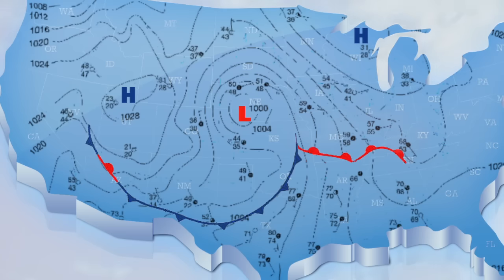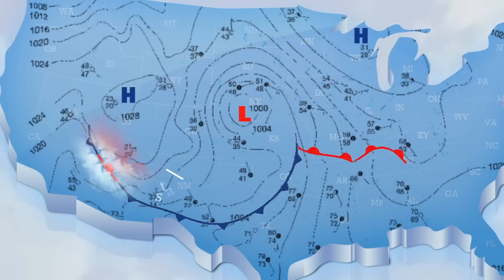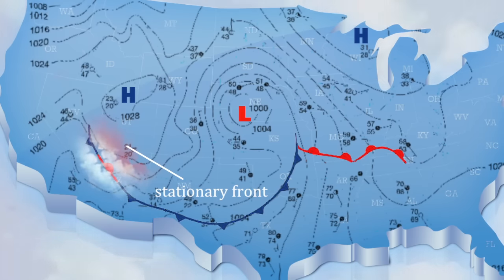A line having alternating cold and warm front symbols is a stationary front. This means there are two different air masses next to each other, but neither one is moving.